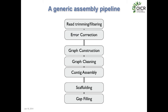Most of the work in assembly goes into building these graphs and finding walks. But there are many steps — when we have real data, it often doesn't behave as expected. We have to perform a lot of cleaning steps before assembly. A generic assembly pipeline starts from raw read data, then performs read trimming or filtering to remove low-quality reads, error correction, building the assembly graph, cleaning it up, constructing contigs from the graph, and then scaffolding them together and performing gap filling.